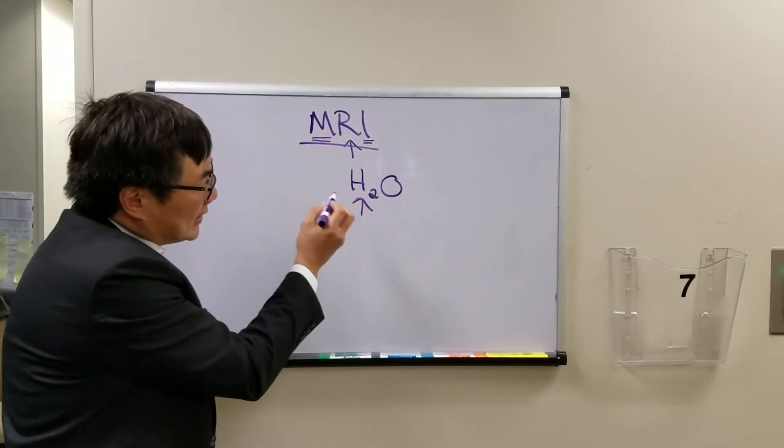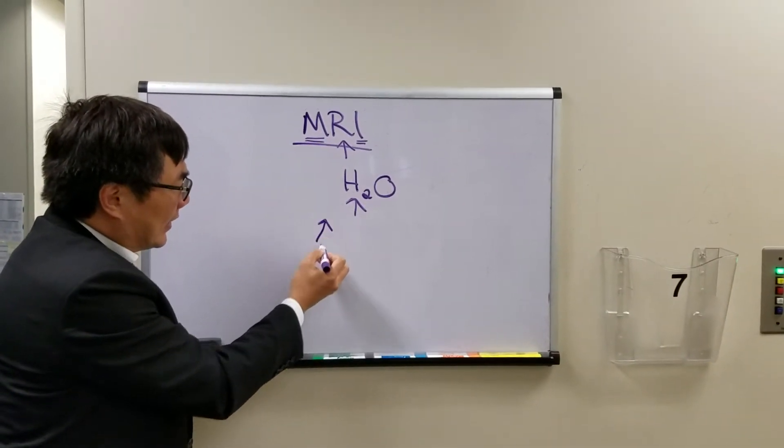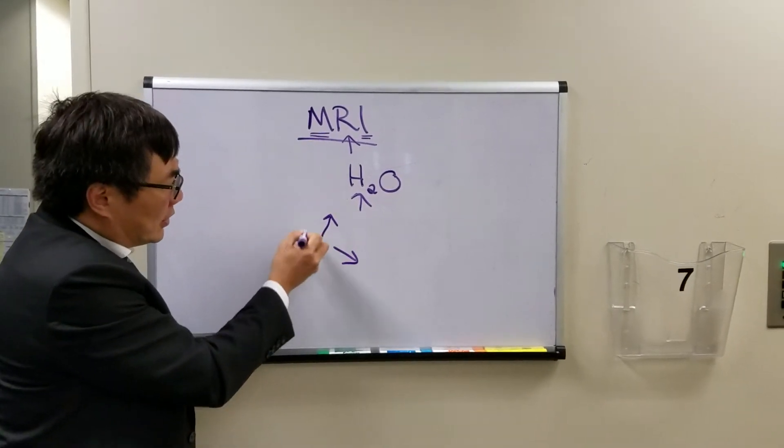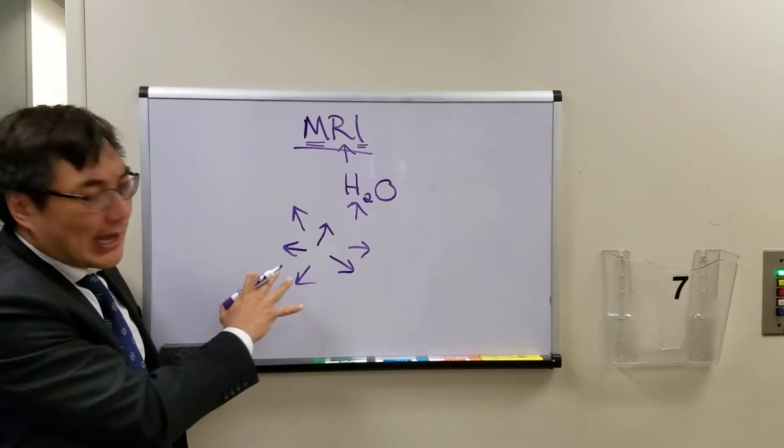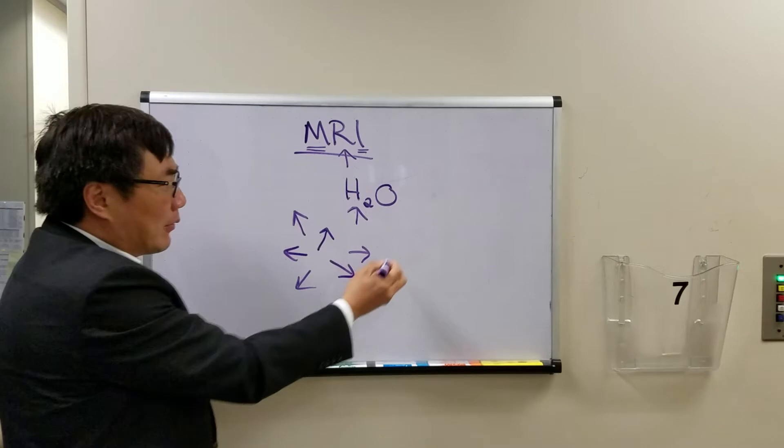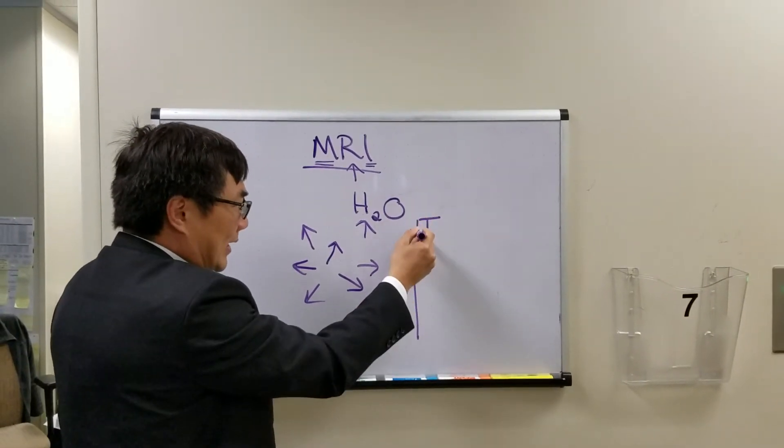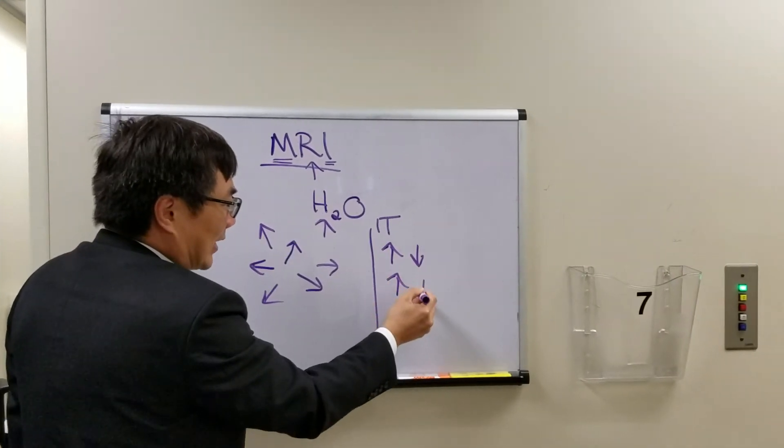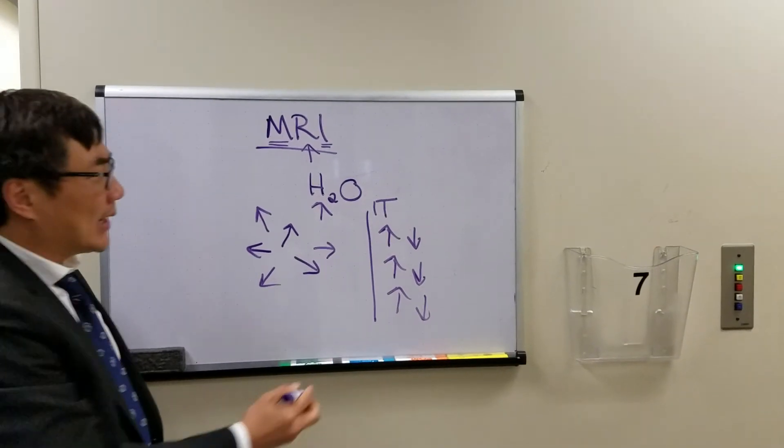So each of these tiny hydrogens has a net magnetic vector, a dipole moment, and under normal circumstances, your hydrogens are all pointing in different directions, and therefore you have no net magnetic vector. However, when you enter into the giant magnetic field of, say, one Tesla, all of your little magnets will align inside of the giant magnetic field.